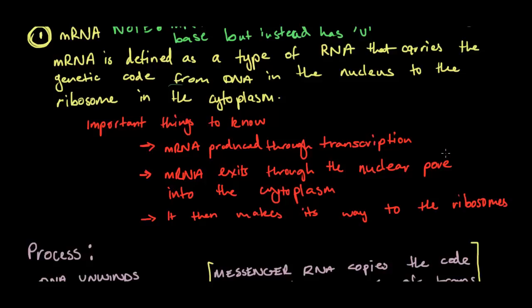So then the mRNA, it exits through the nuclear pore into the cytoplasm. Now in the cytoplasm, there's quite a lot of things, and if you can remember, you might have done it in your prelim course and you might have revisited it later, but there's something called the ribosomes in the cytoplasm. The mRNA makes its way to the ribosomes.